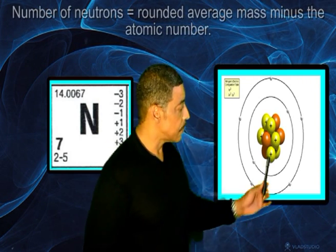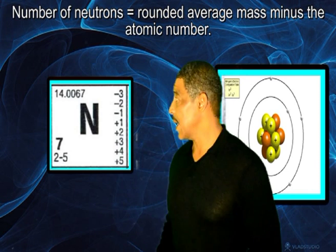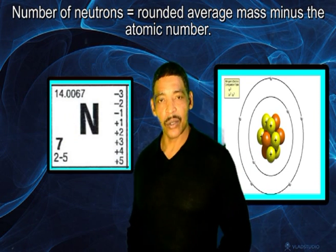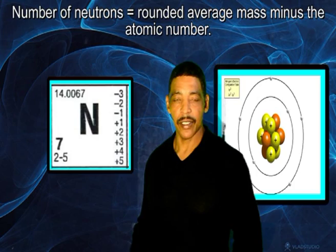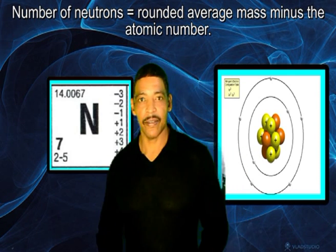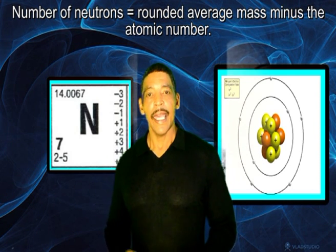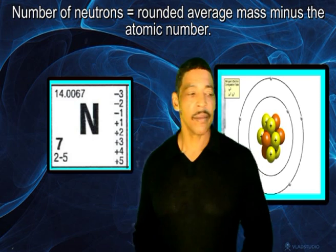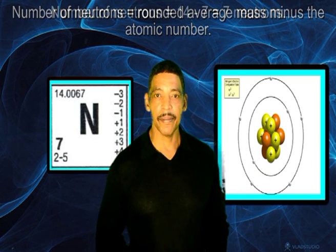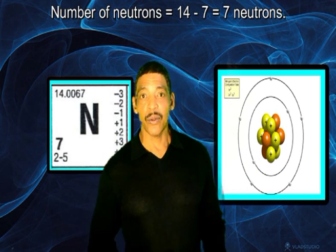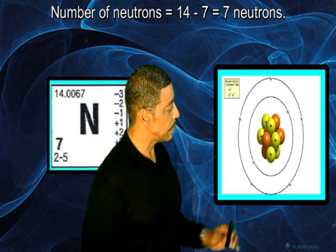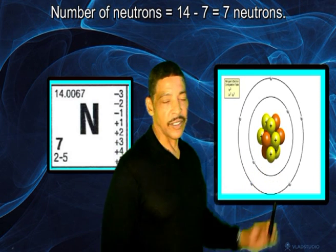To determine the number of neutrons, let's first round the average atomic mass to a whole number. 14.0067 will round to 14, and then we subtract seven from 14. Seven from 14 is seven, so in the nucleus of nitrogen we find seven neutrons.